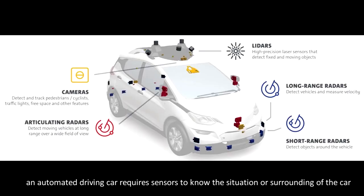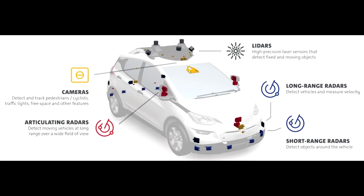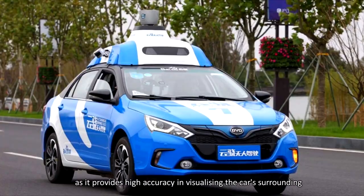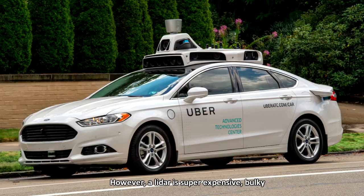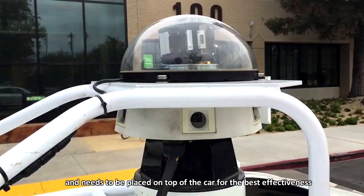Just like a human, an automated driving car requires sensors to know the situation and surroundings of the car. The most commonly used sensor is LIDAR, as it provides high accuracy in visualising the car's surroundings. However, a LIDAR is super expensive, bulky, and needs to be placed on top of the car for best effectiveness.